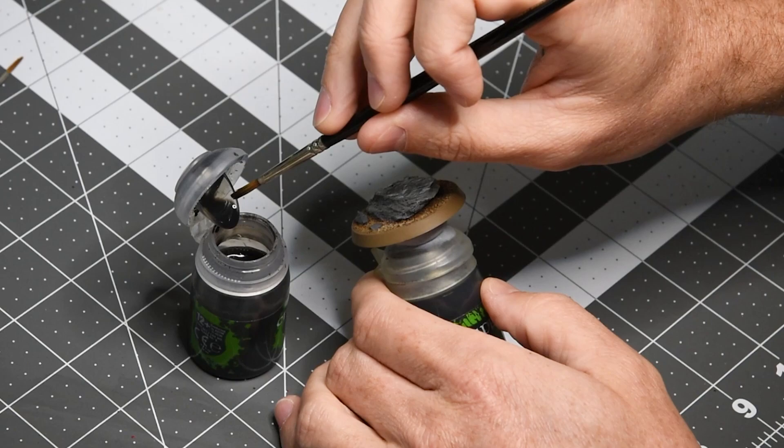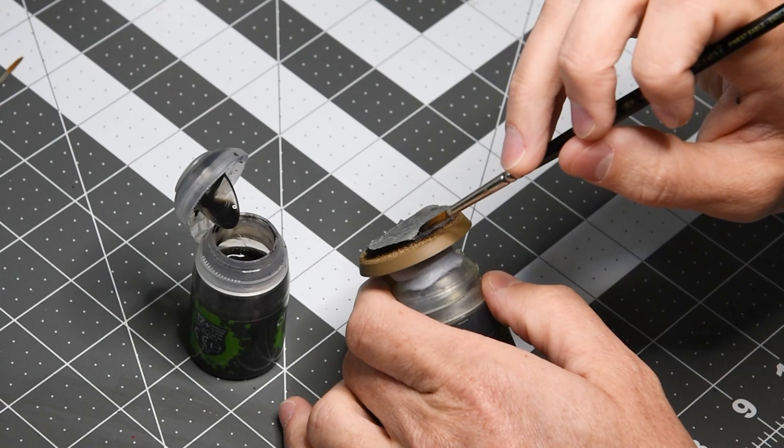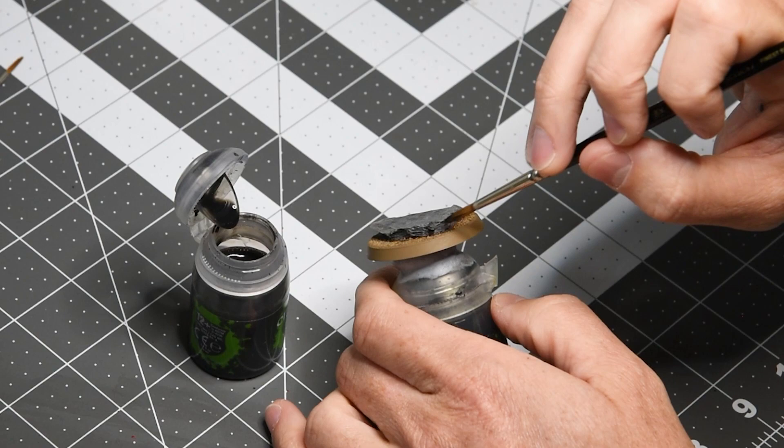So to dull it down a little bit I'm just applying very thin layer of Nuln Oil and specifically to the underside and catching those edge highlights a little bit turning the gray into a more muted tone.